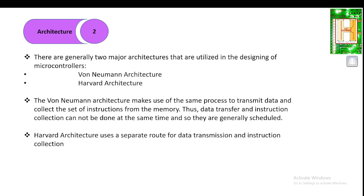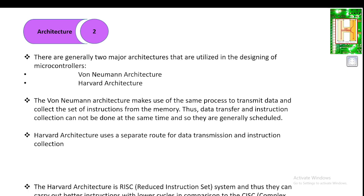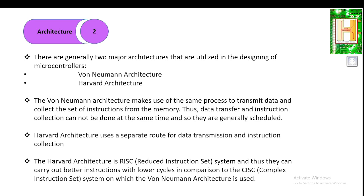The next is Harvard architecture, which uses separate routes for transmission and collection of information, so it has dedicated paths making it somewhat easier. The Harvard architecture is based on a Reduced Instruction Set (RISC) system, allowing better instruction execution with lower cycles compared to the Complex Instruction Set (CISC) system on which the Von Neumann architecture is based. As per your requirement, you can choose either architecture.